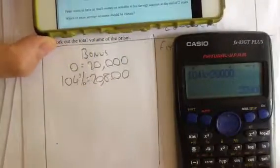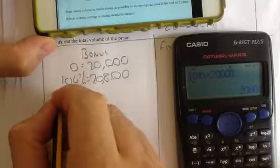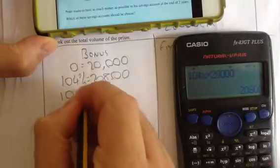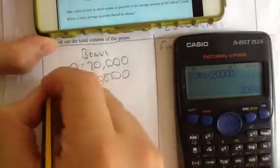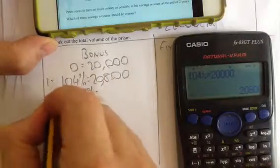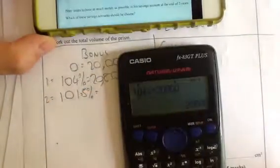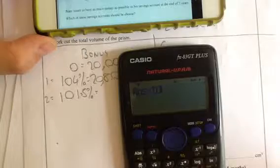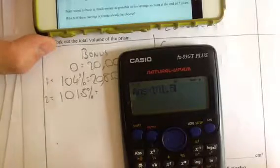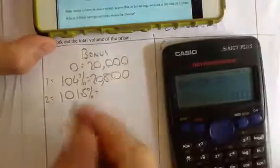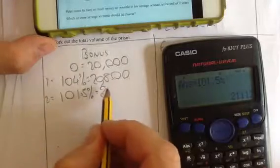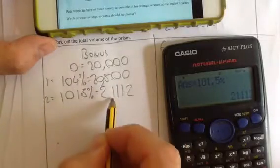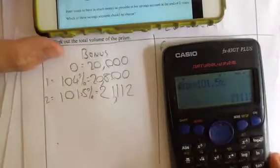Then it's 1.5% for the next year. So I'm going to have to times this by 101.5% for my next year. So first year, then second year. So I get my answer, I times it by 101.5%. So I get £21,112.